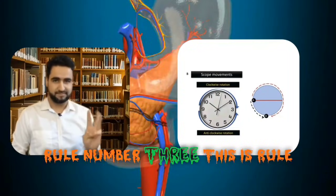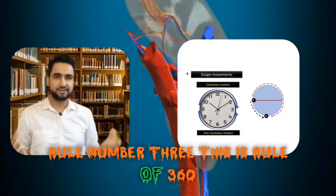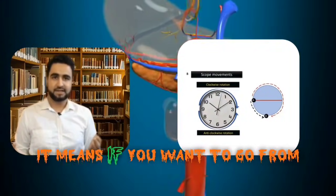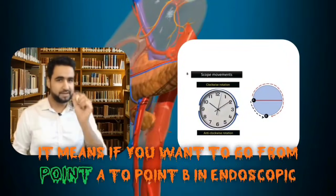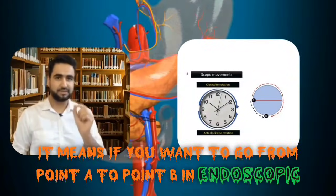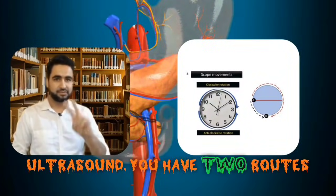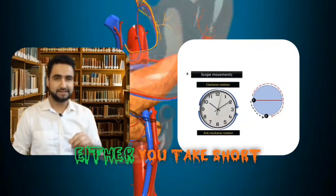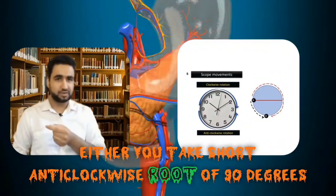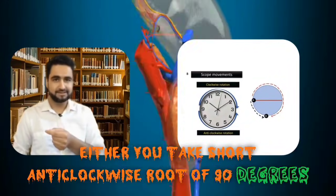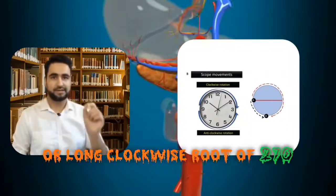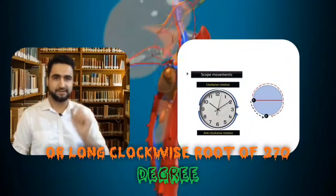Rule number three is the rule of 360. It means if you want to go from point A to point B in endoscopic ultrasound, you have two routes — either you take the short anti-clockwise route of 90 degrees or the long clockwise route of 270 degrees.